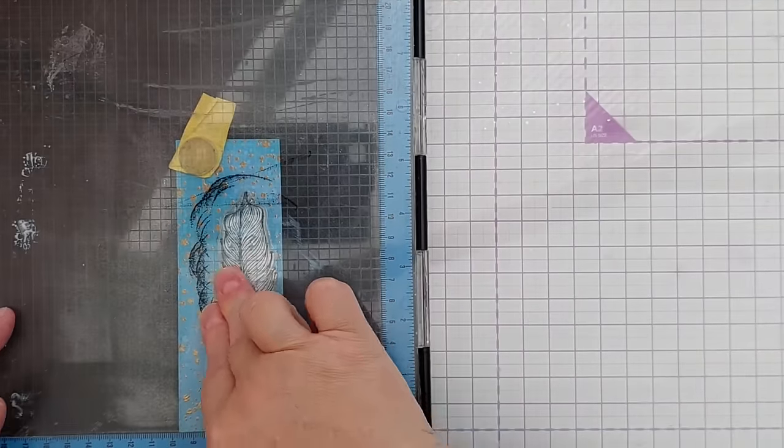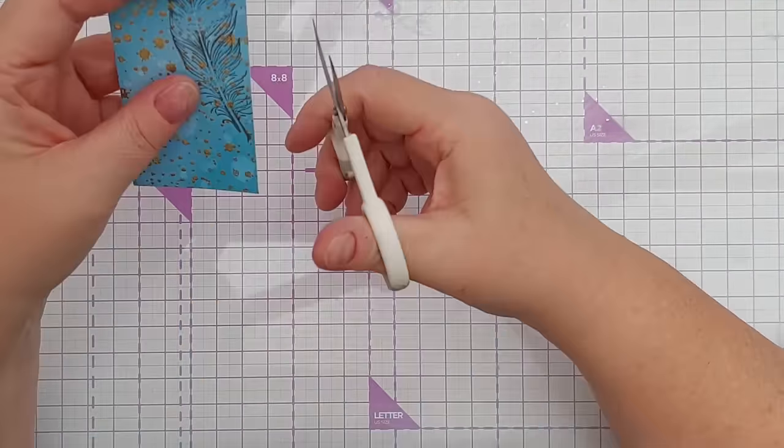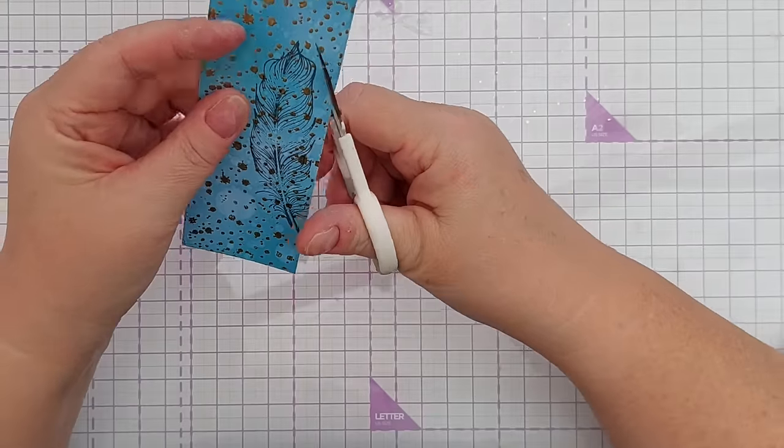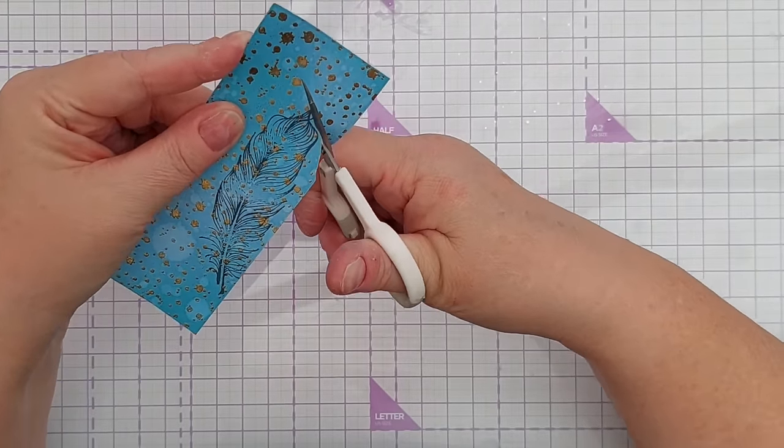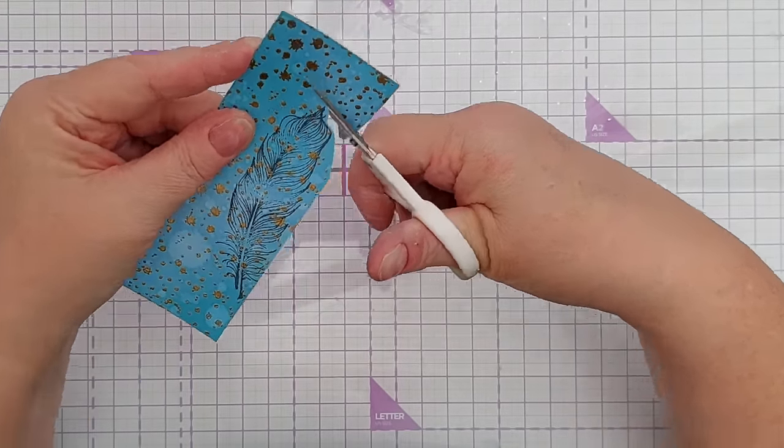And then take your detail scissors and cut around the outside, leaving a little border.